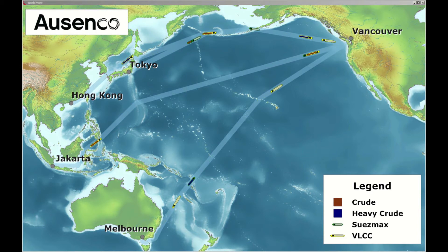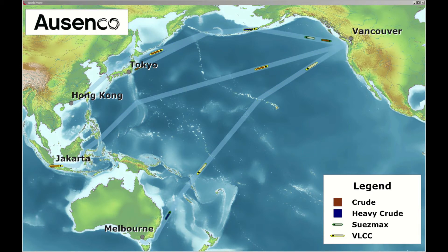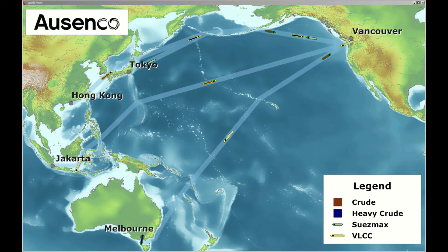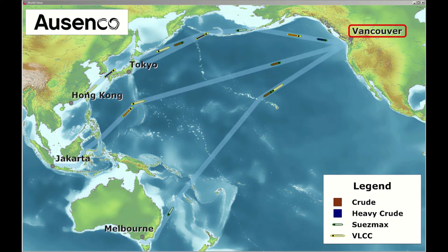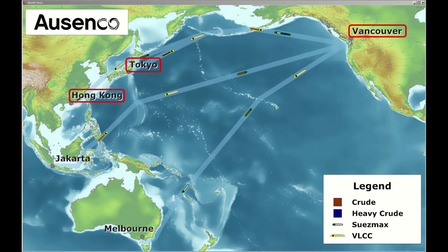This video shows a hypothetical simulation of a transportation network across the Pacific Rim. In this example, the export terminal, Vancouver, ships two grades of crude to four destinations: Tokyo, Hong Kong, Jakarta, and Melbourne.